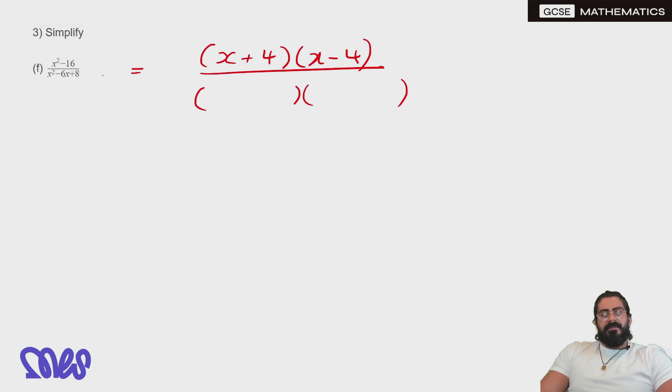Now it's 8 and we have to make 6, so we need to use 4 and 2. How do we make minus 6? Well, they both need to be negative. x minus 4 cancels then, and we're left with x plus 4 over x minus 2 is your solution.